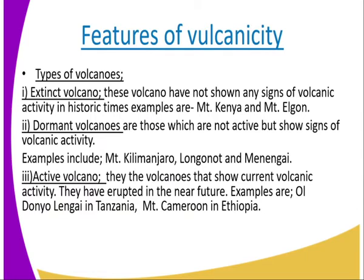Types of volcanoes. Volcanoes are one of the exclusive features, and there are three types. The first is the extinct volcano — they don't show any signs of volcanic activity in historic times. Examples are Mount Edgar and Mount Kimi. Dormant volcanoes are those mountains which are not currently active but show signs of volcanic activity. Examples are Mount Kilimanjaro, Longonot, and Menengai.